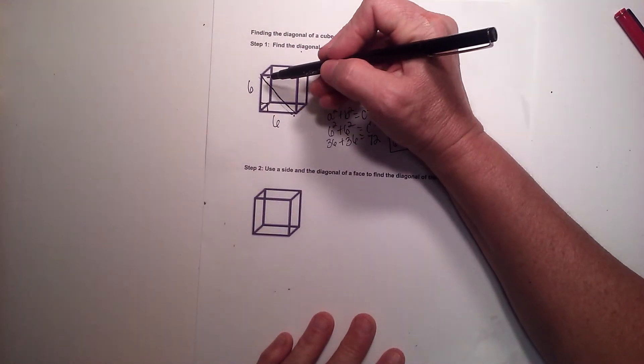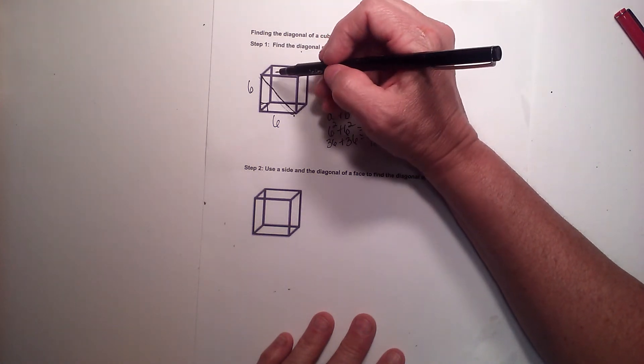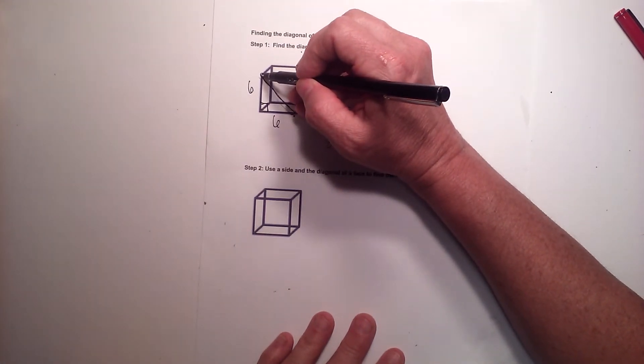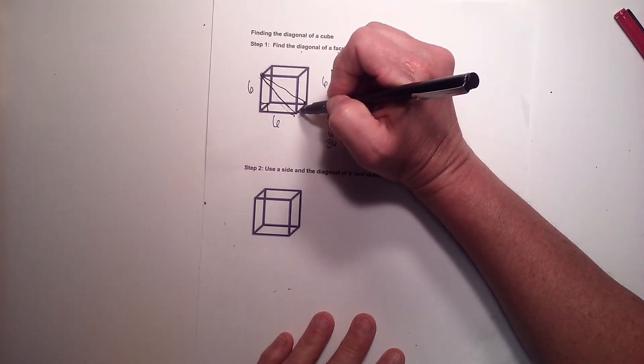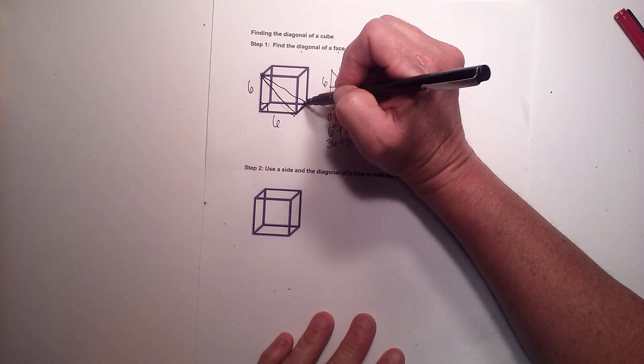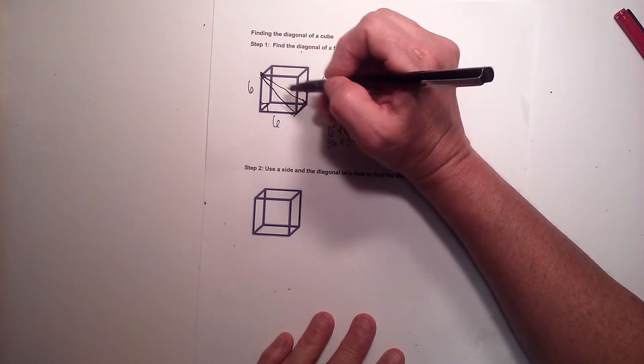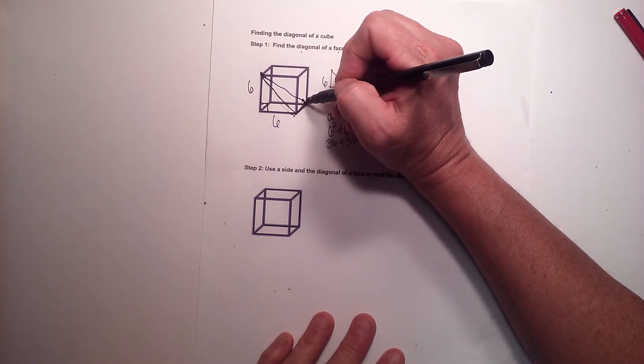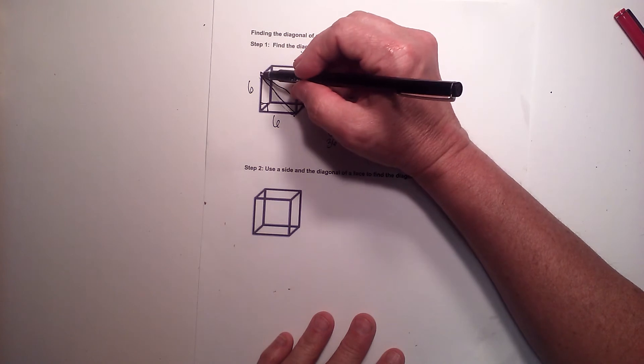Now what we're going to do is use this diagonal to connect from this top point all the way to this far point over here, and this makes a diagonal across from the top corner, top left to bottom right. We can find that length. Now what does that look like?